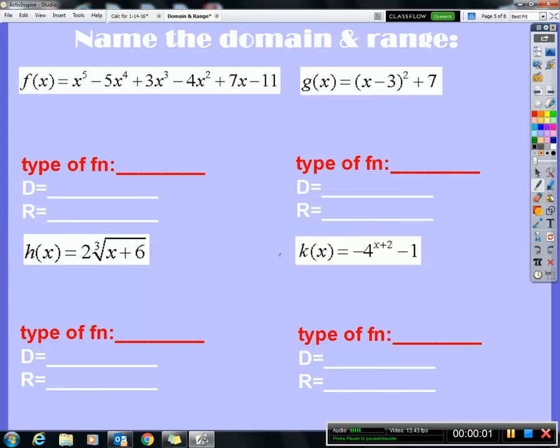And away we go on the third and final part of domain and range. Let's name the family of functions. See, f of x is simply a polynomial function.